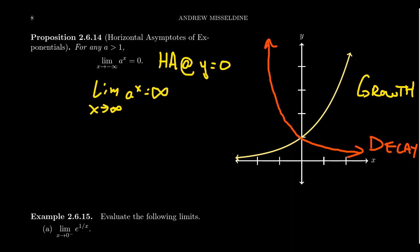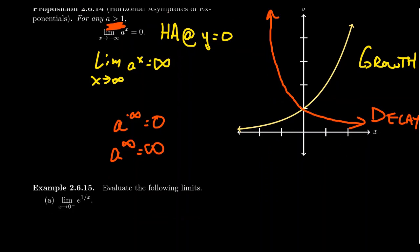The key thing to remember is: if you ever see a to the negative infinity, that's going to equal zero, assuming a is greater than one. Or if you take a to the infinity, that's going to equal infinity, again if a is greater than one. If a is like one-half — less than one — you get the reverse principle, so pay attention to that.